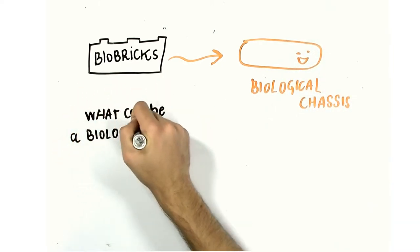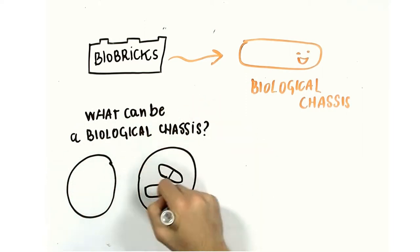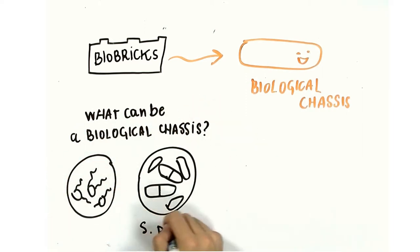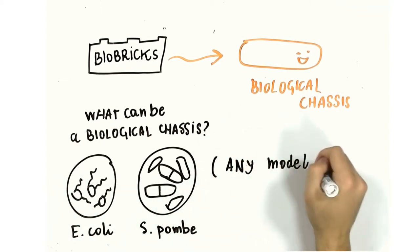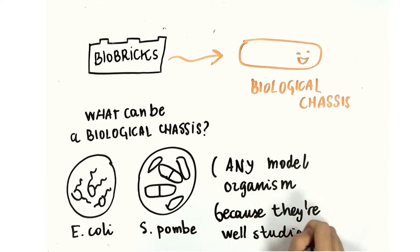Technically, you can modify any model organism like fish and yeast or E. coli. However, when you look at the standard parts in the BioBricks registry, most of them are optimized for E. coli.